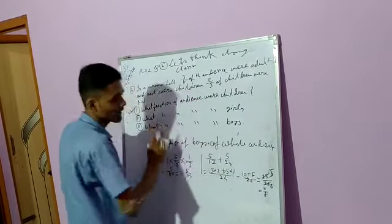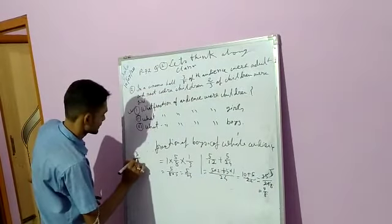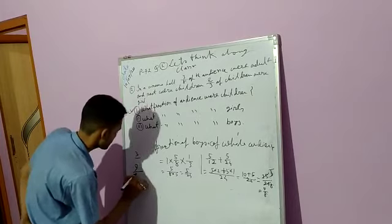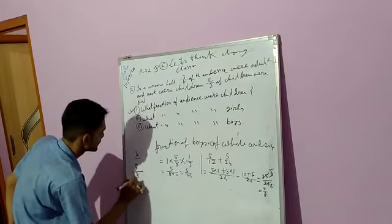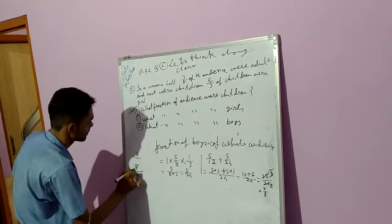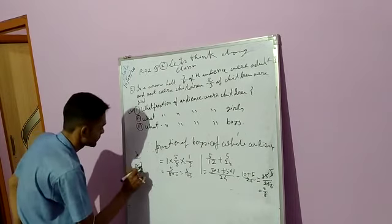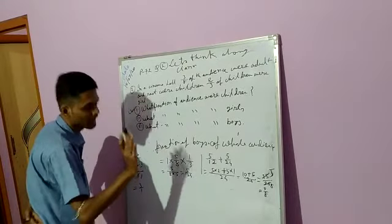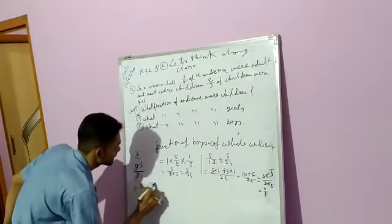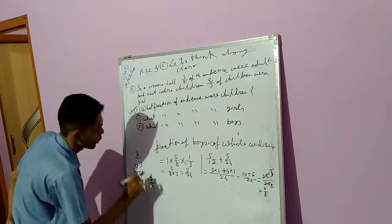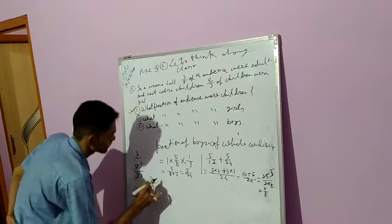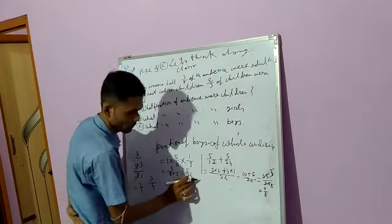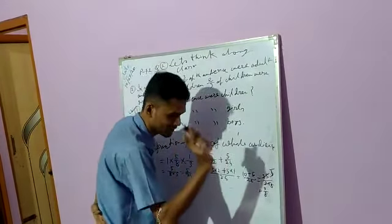And simplest form means like this: 9 by 4, 9 by 3. Here we can divide the common factor. Simplest fraction means there is no common factor between the numerator and the denominator. Like this, there is no common factor between the numerator and denominator. Simplest is one.